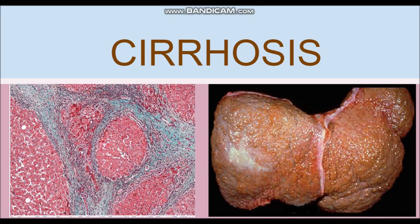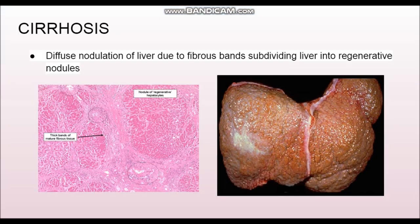Hello everyone. In this video we will discuss about cirrhosis. Cirrhosis is the diffuse nodulation of the liver, which is due to fibrous bands that divide the liver into regenerative nodules.